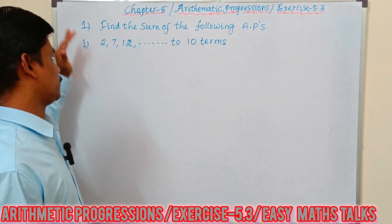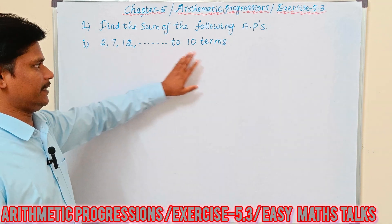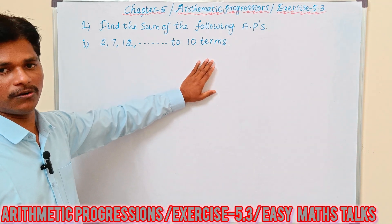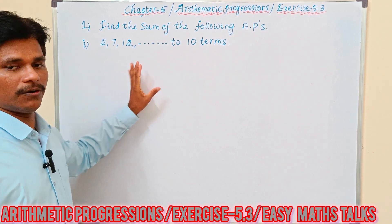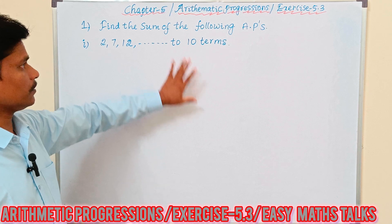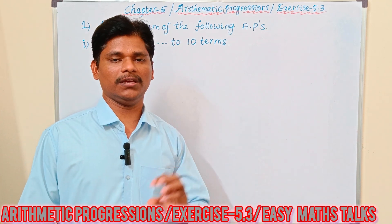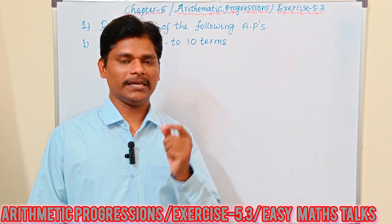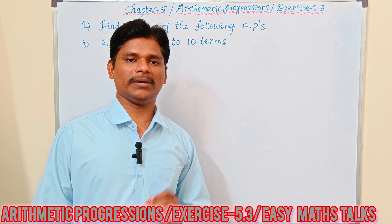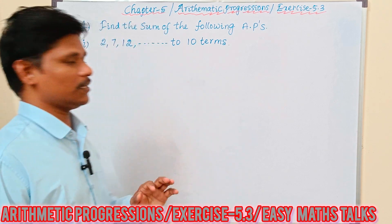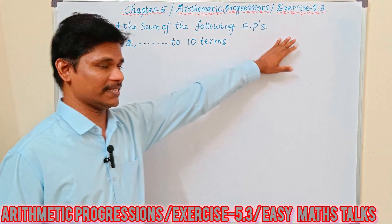The first question: 2, 7, 12, and so on, up to 10 terms. How to find out the sum of these series? This entire Exercise 5.3 is based on only sum of the series. The formula is: Sn = n/2 × (2a + (n−1) × d). Based on that formula, we will complete this exercise.